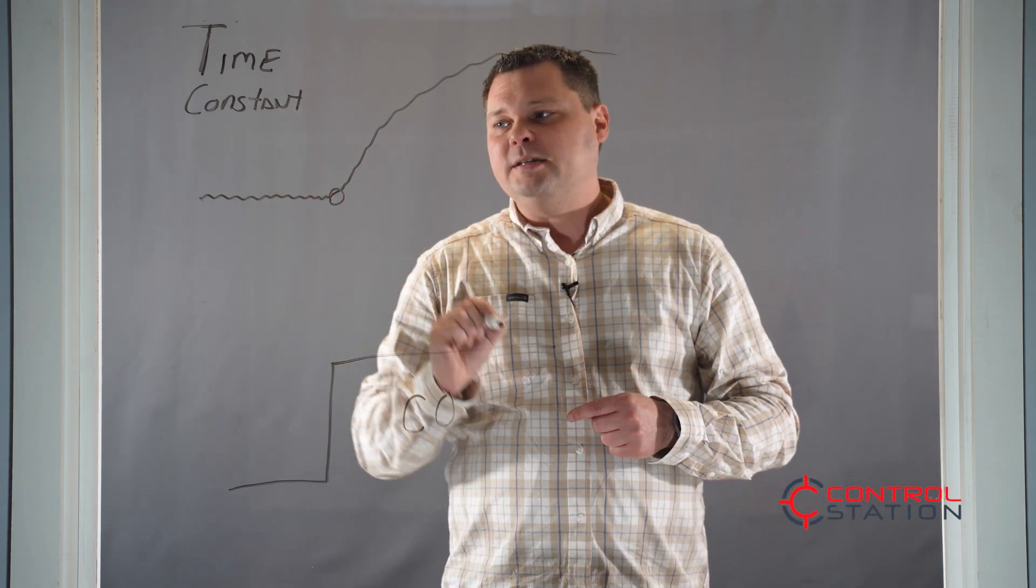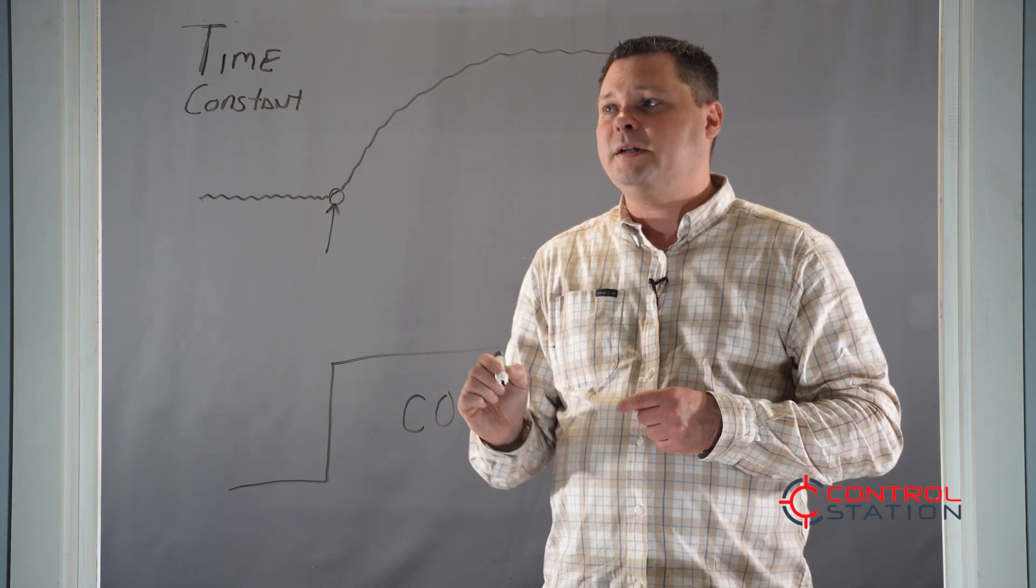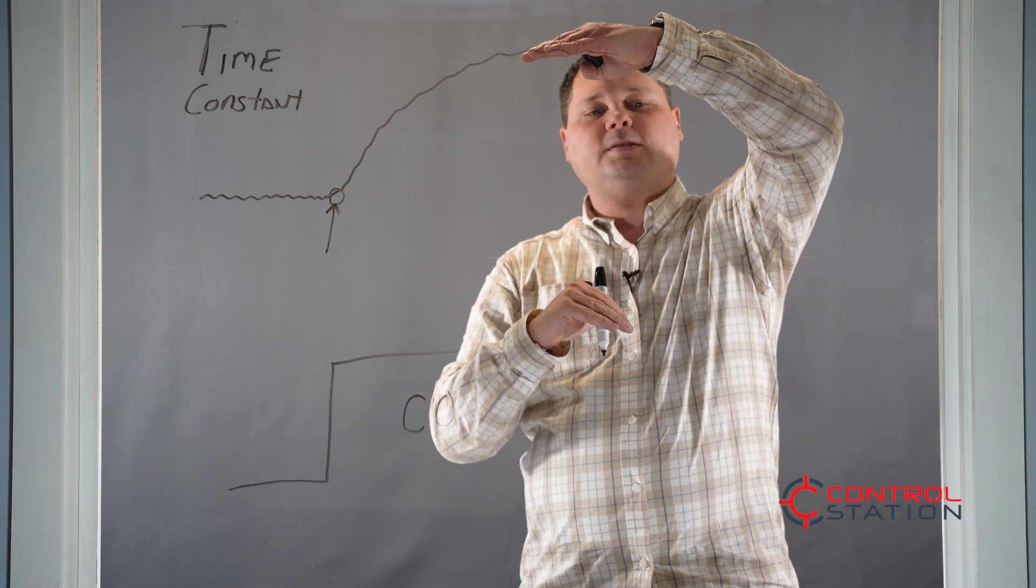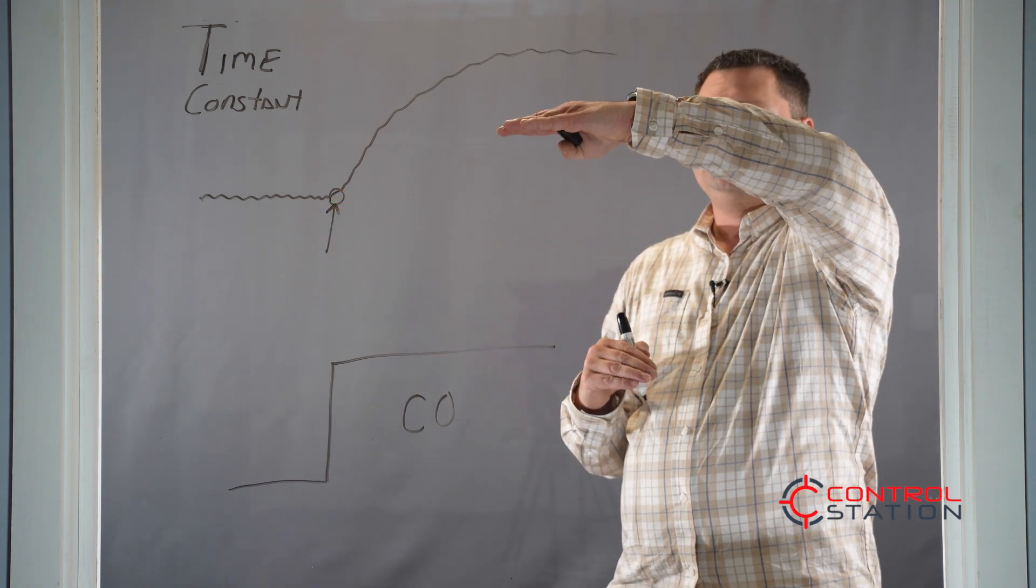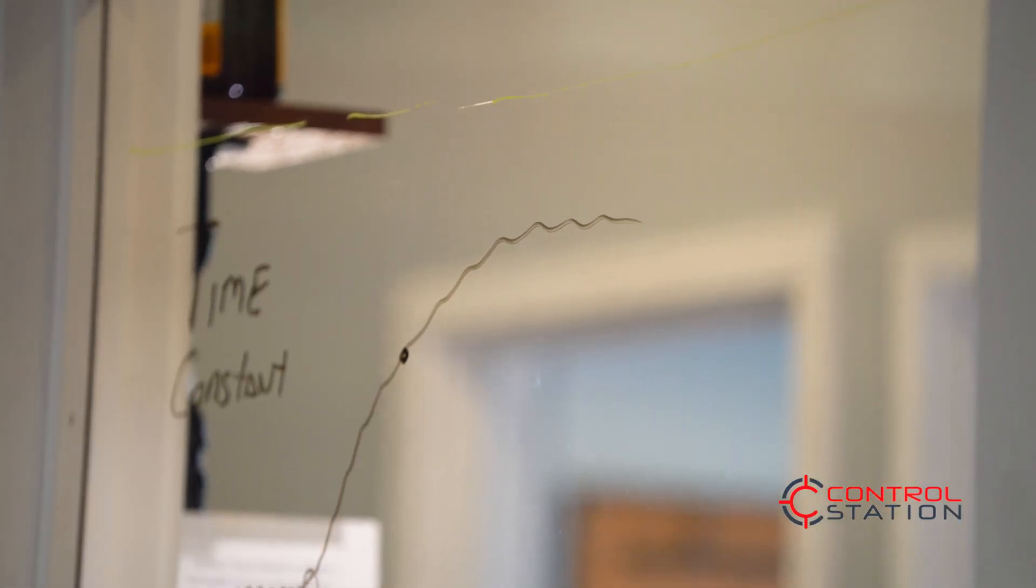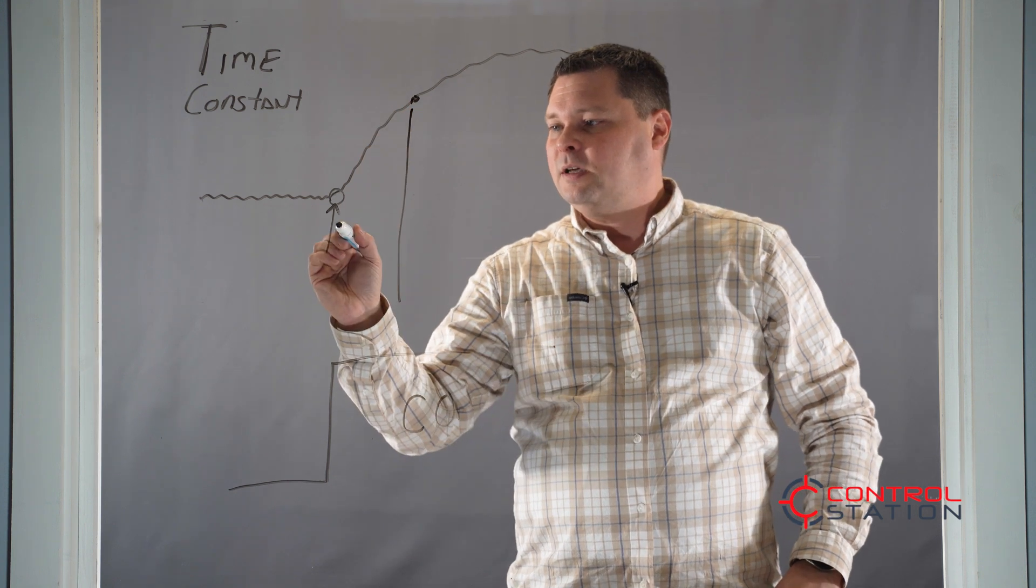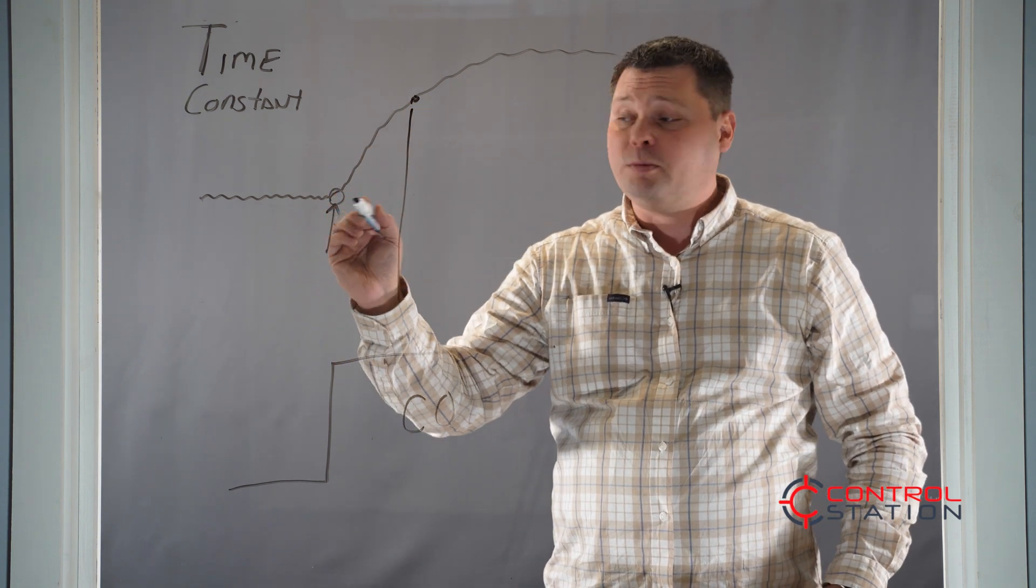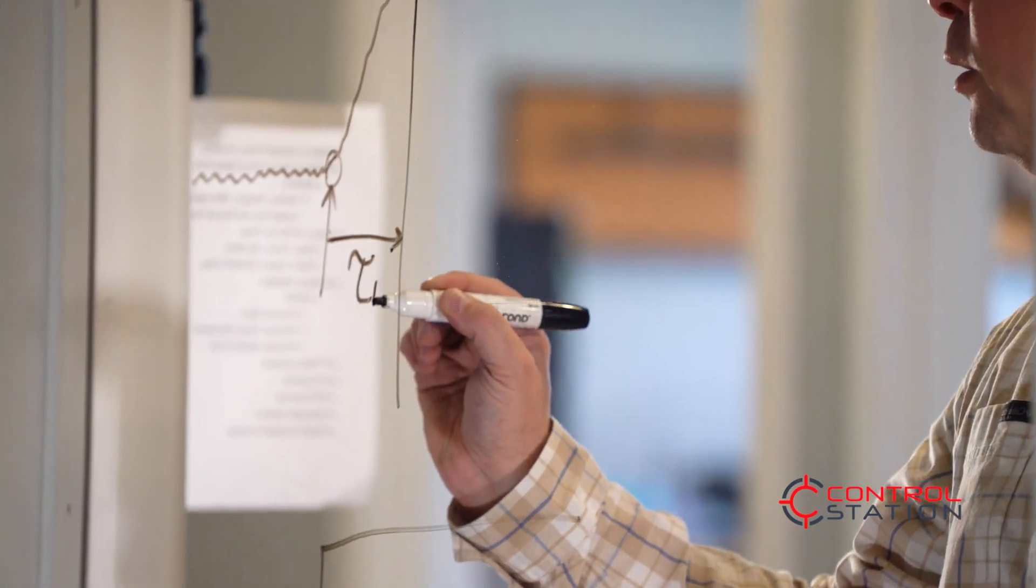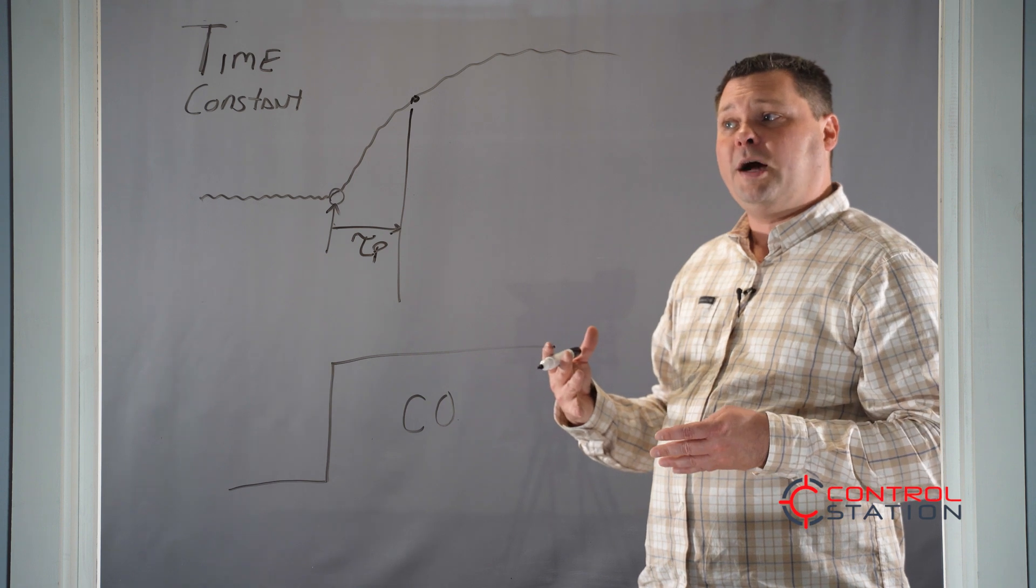Specifically, a time constant is the time it takes from when the process first starts to respond till it reaches about 63% of the way there. So if this is 100% of the way there, this is halfway there, 63 is a little more than halfway. The time it takes from where the process started to respond till it reached 63% of the way there is known as a time constant or a tau p. That is the speed of the response.